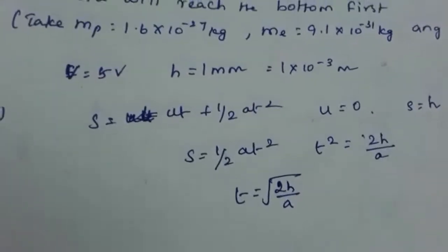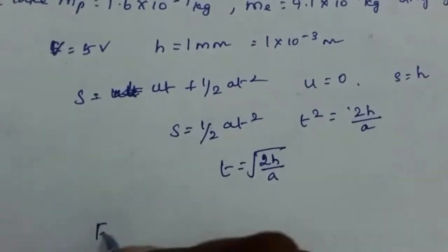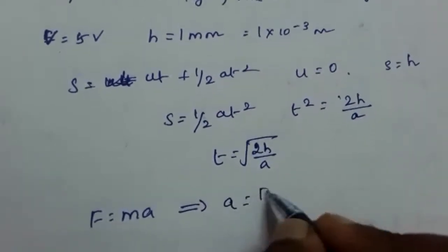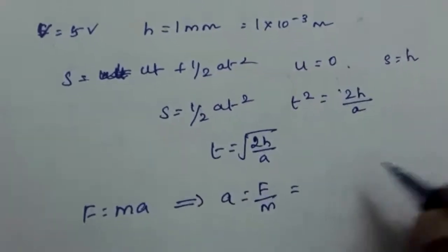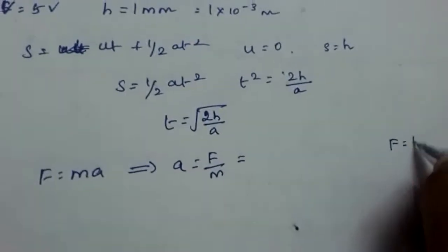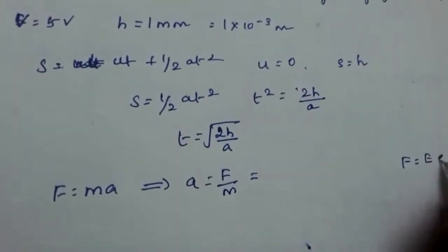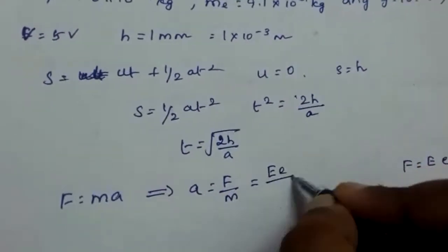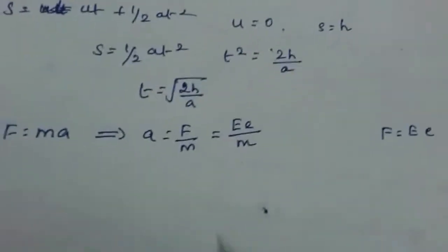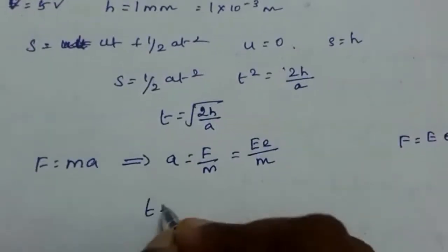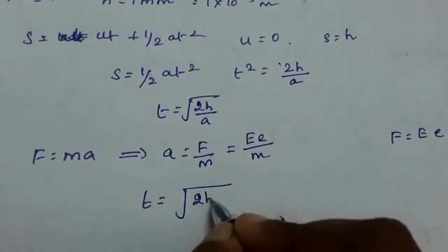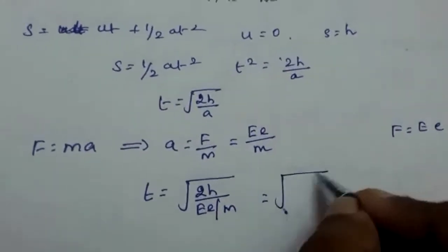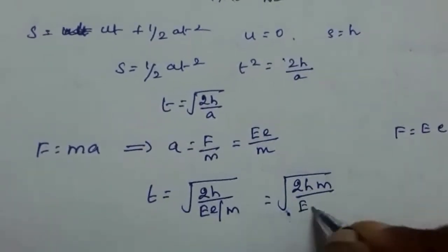We do not know the acceleration yet. By Newton's second law, F = ma, so a = F/m. The force on the charge is F = eE, so acceleration a = eE/m. Substituting into the time formula: t = √(2h/(eE/m)) = √(2hm/eE).